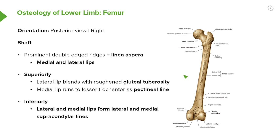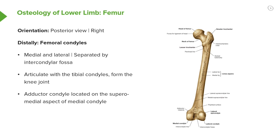Looking at the shaft, we can see running down from these trochanters a lateral and a medial lip that forms the linea aspera. Superiorly the lateral lip blends with the roughened gluteal tuberosity, and the medial lip runs to the lesser trochanter as the pectineal line, where we'll see some important muscles attached such as pectineus. Inferiorly the lateral and medial lips separate to form the lateral and medial supracondylar lines.